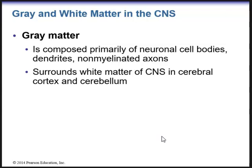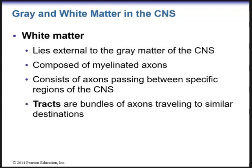Gray matter is composed primarily of neuronal cell bodies, dendrites, and non-myelinated axons. It surrounds the white matter of the central nervous system in the cerebral cortex and the cerebellum. White matter lies external to the gray matter of the CNS. It's composed of myelinated axons and also consists of axons passing between specific regions of the CNS. Within the white matter, we have tracts — bundles of axons traveling to similar destinations within the brain.